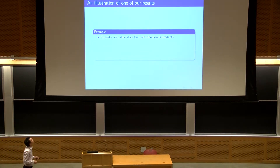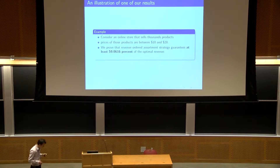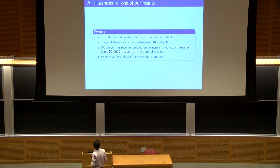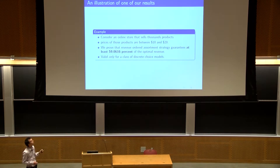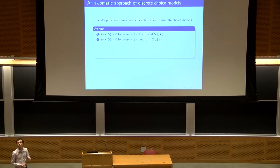Let's take a look at examples of the results. Suppose we have an online store that sells thousands of different products, and the prices are between $10 and $20. If you use the revenue order assortment strategy, you are guaranteed to get at least 59% of the optimal revenue, as long as consumers follow some structural assumptions on their choices. To provide this class, we do an axiomatic characterization. First, probabilities are always non-negative. Second, if you don't show the item, no one will buy it.